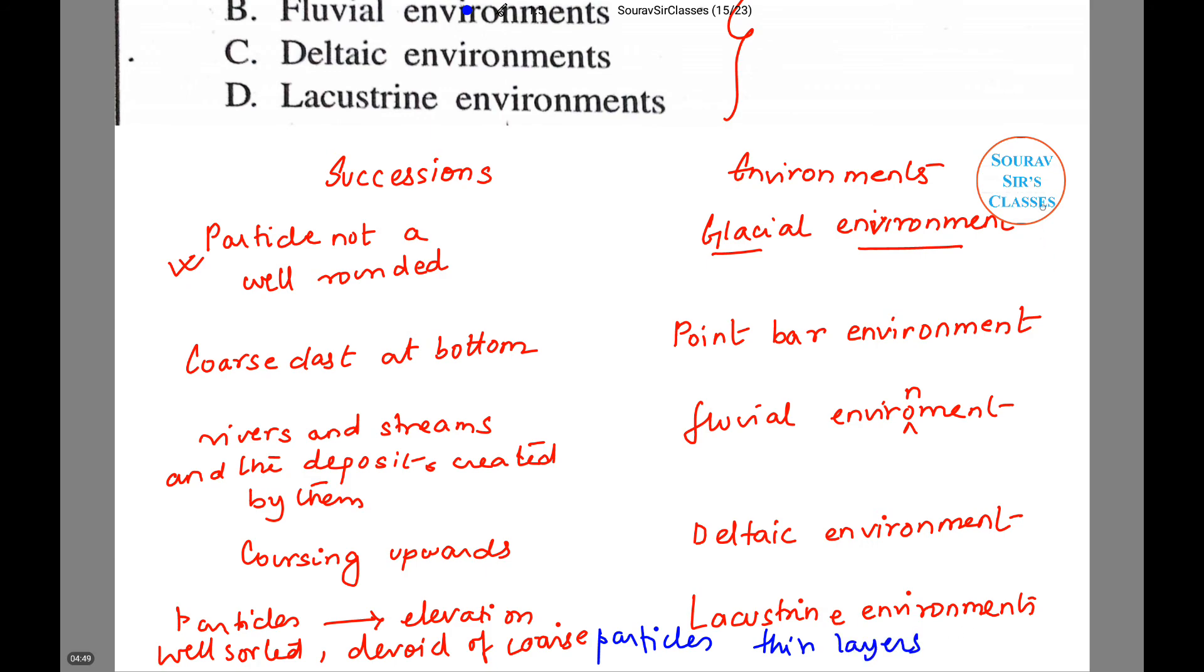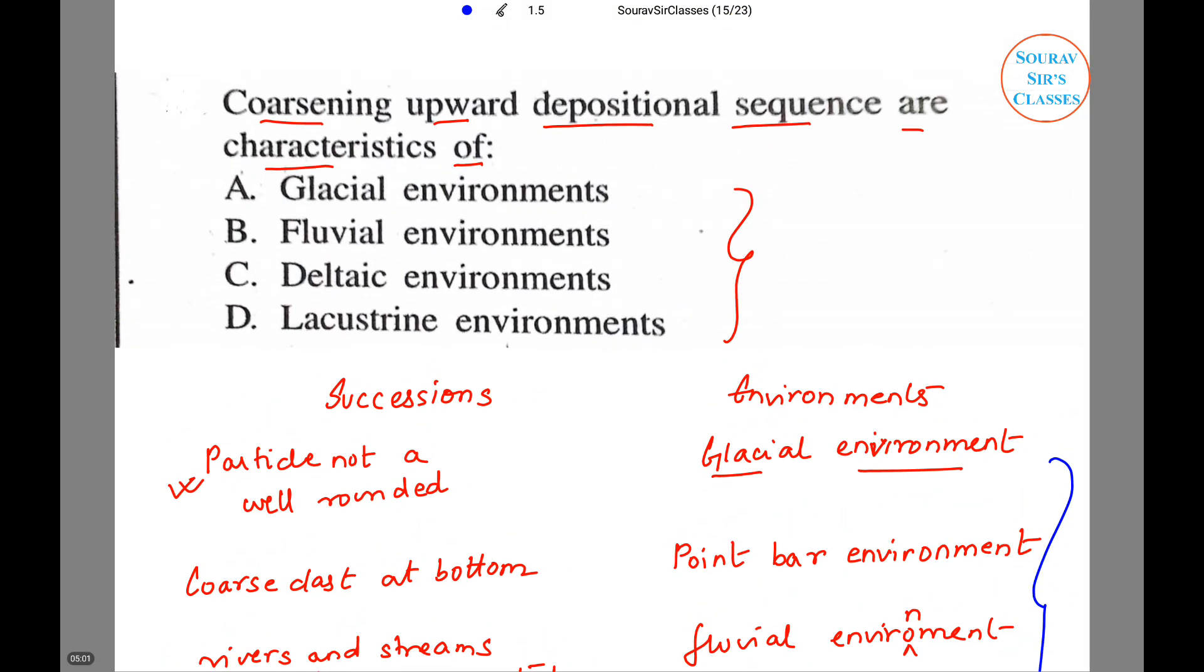Now if you look at all these environments, you will find the most appropriate for the above is the deltaic environment, that is coarsening upwards, and the question was coarsening upwards depositional sequence. It is characterized by C, so C will be the correct option.